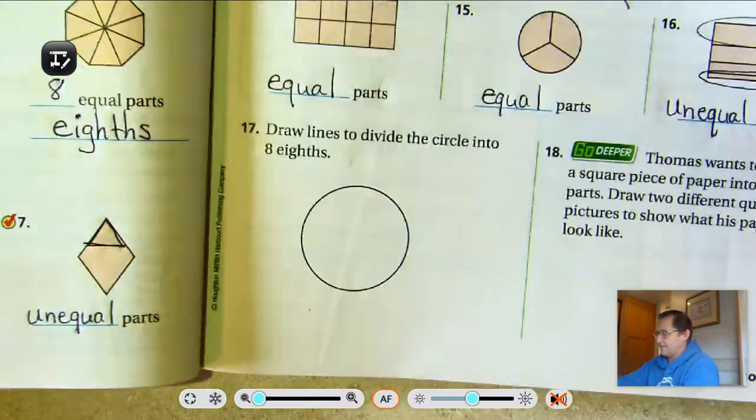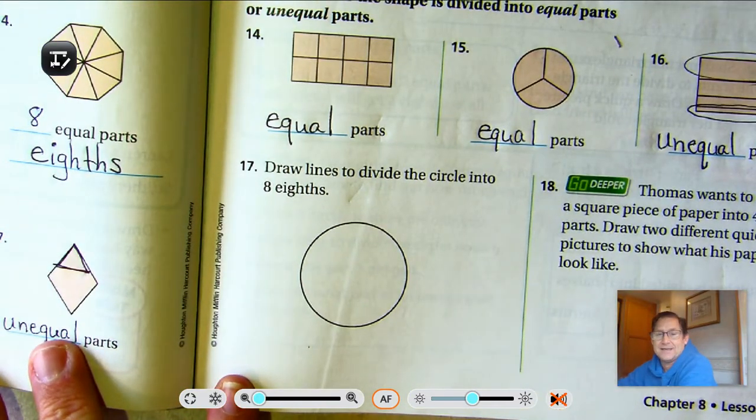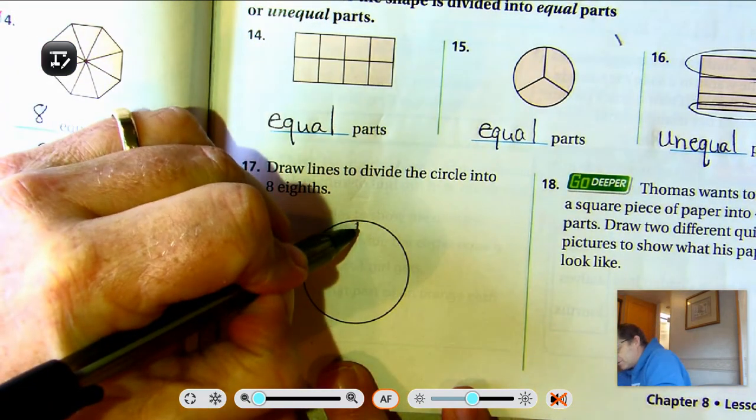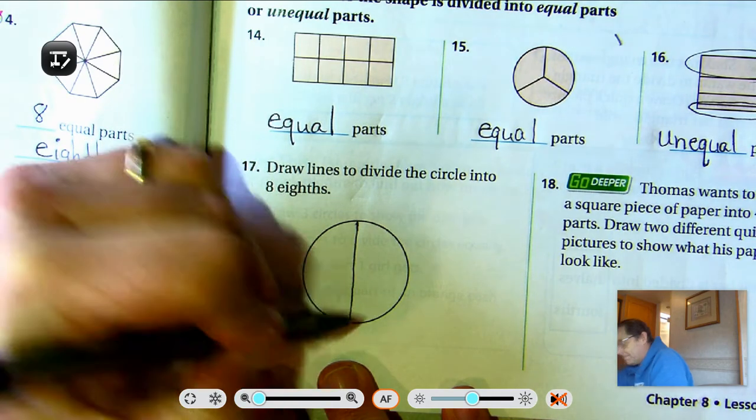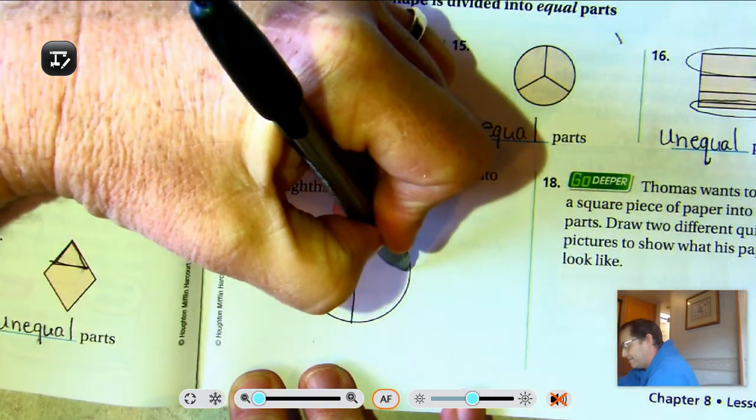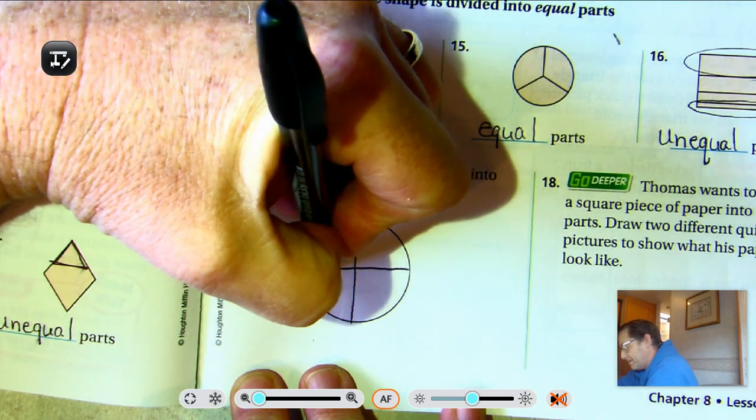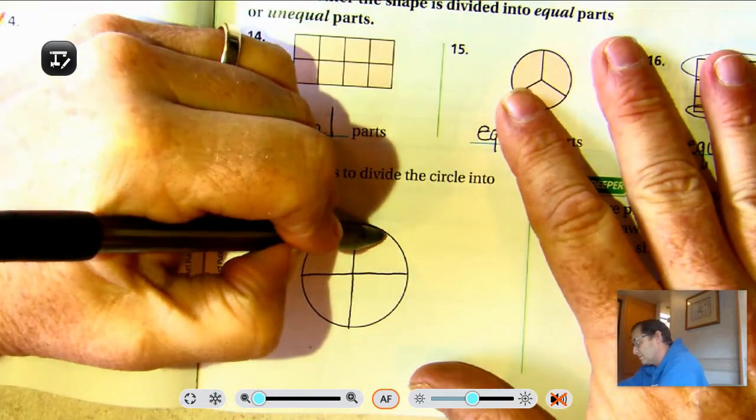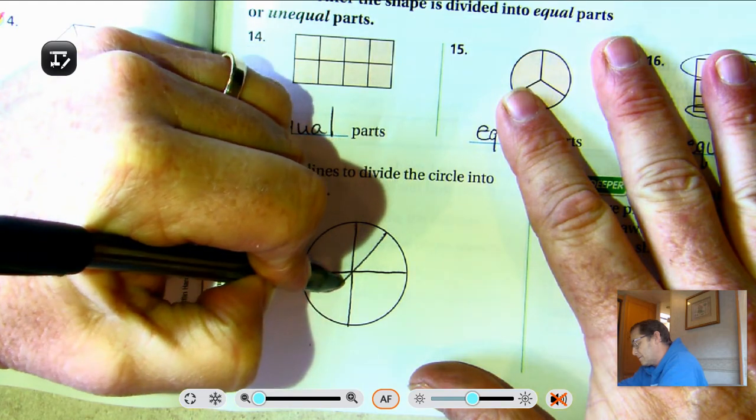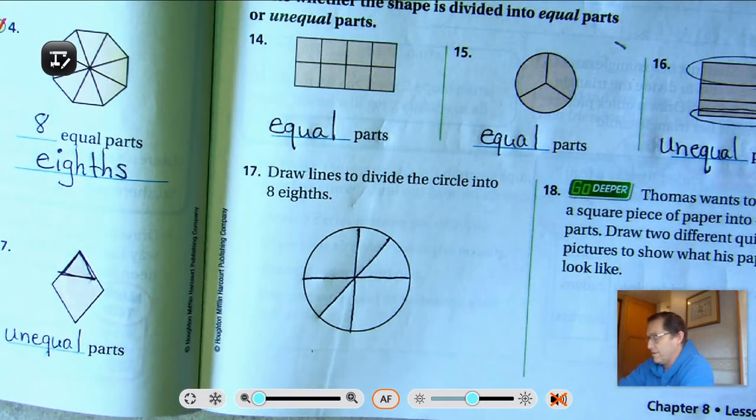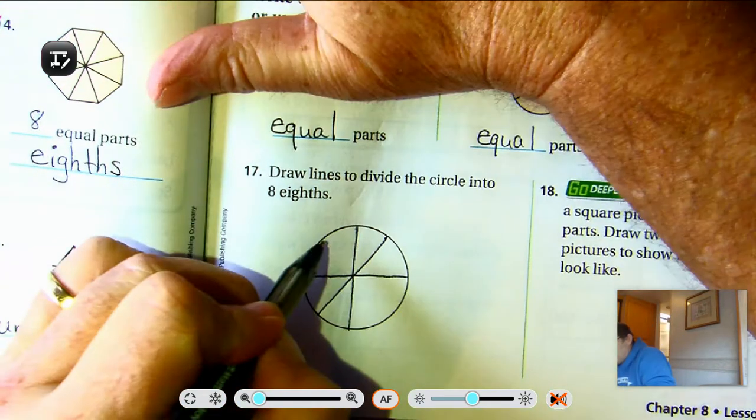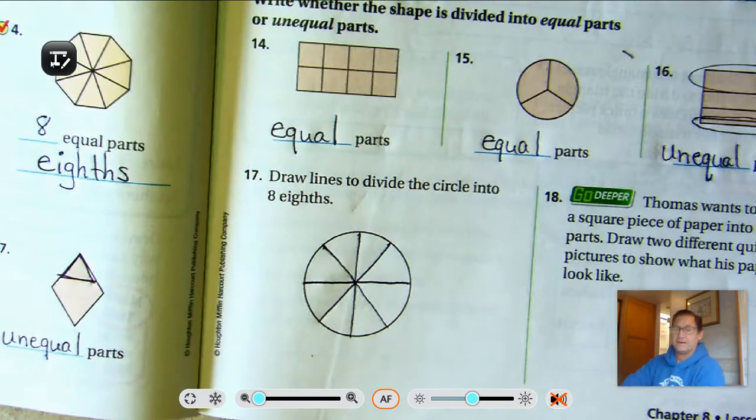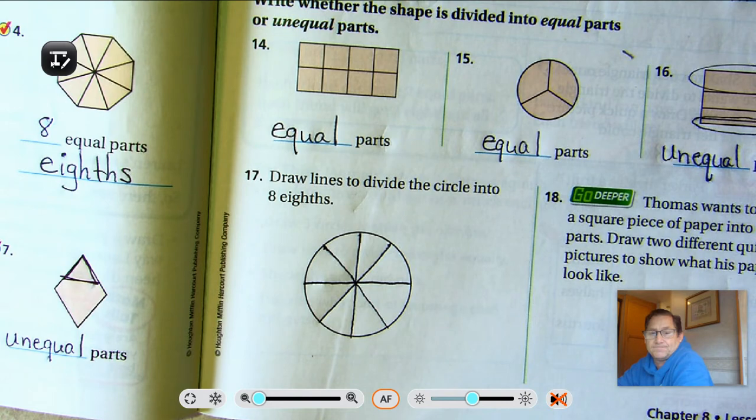Okay, seventeen. Draw lines to divide the circle into eight eighths. Take your circle and divide it in half. Take that half and divide it in half. We now have four pieces. Draw line through those. We now have six pieces, but they're not equal. Right through the center again. And we have eight pieces. So, eight eighths.